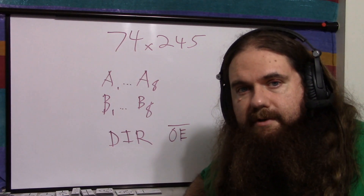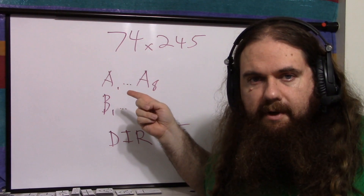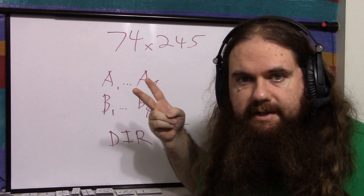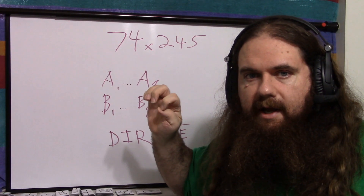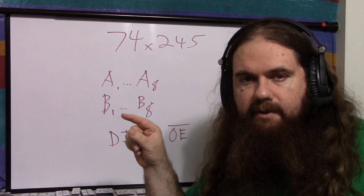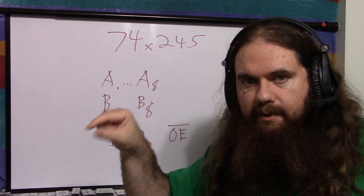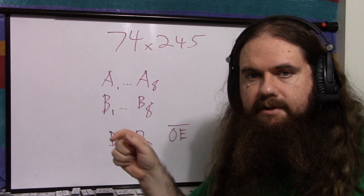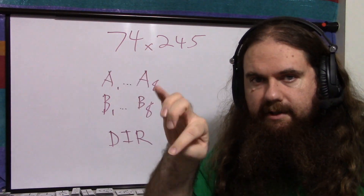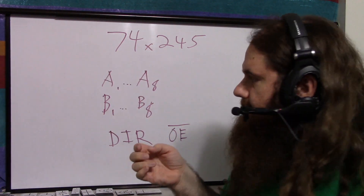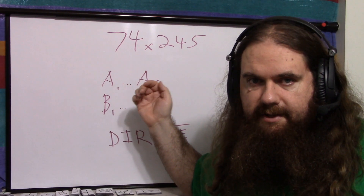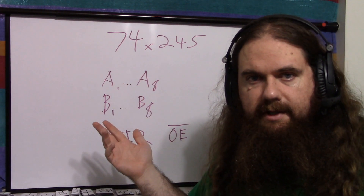That's all there is to a bus transceiver — two tri-state buffers in one. If you wanted to build one from two tri-state buffers, your direction line would be the enable signal on the buffers, and you'd invert one. So a high gives high to one buffer and low to the other. You'd also need additional logic — some gates — to implement output enable if you needed that too.